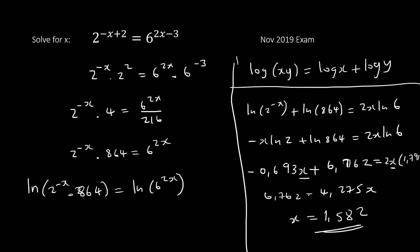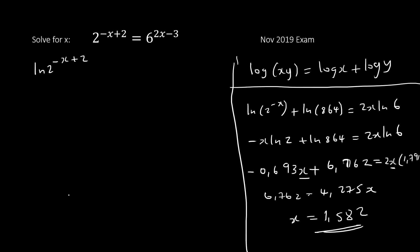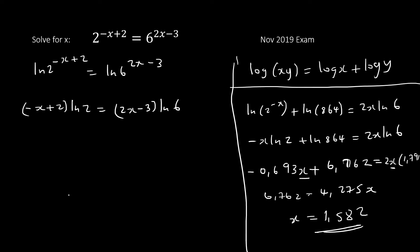Rewind the video to copy the steps if needed. Now the easy way: if you have exponents on both sides, apply ln straight from the beginning. So applying ln to 2^(−x+2) = 6^(2x−3), the exponents come down immediately: (−x+2)·ln2 on the left and (2x−3)·ln6 on the right.